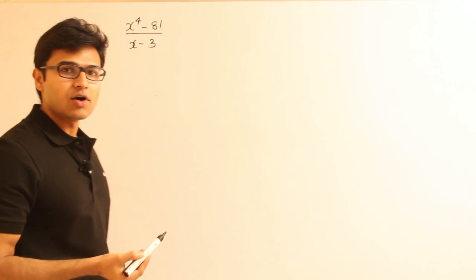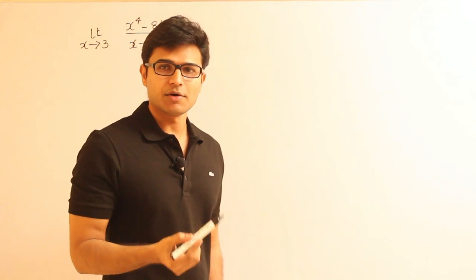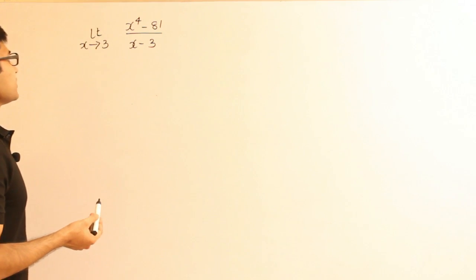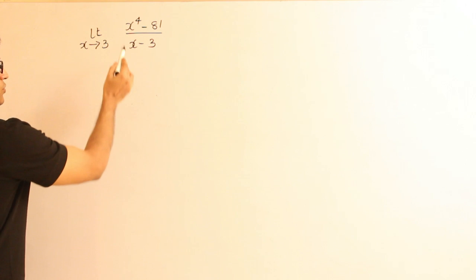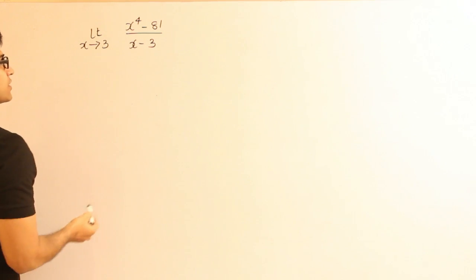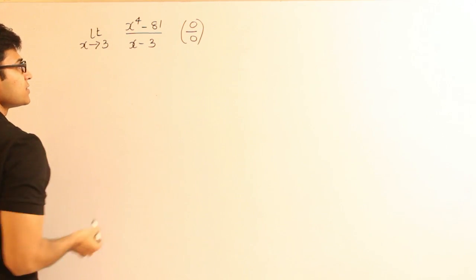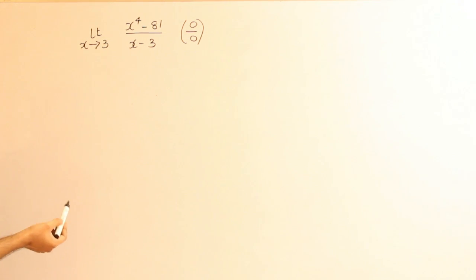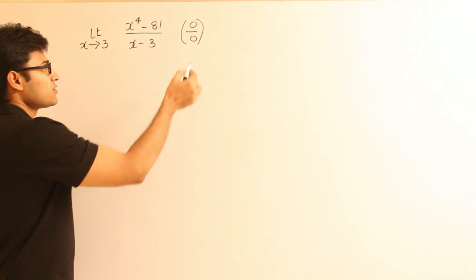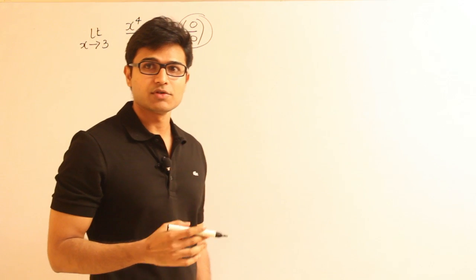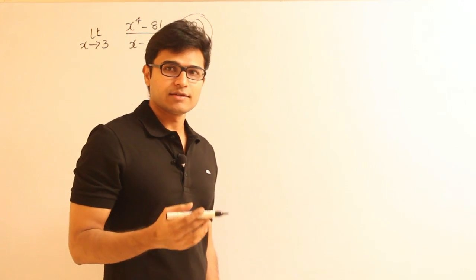Assuming that in the options we don't have 'limit does not exist' — only numbers are present — then how to find it out? If you directly substitute 3, you get 81 minus 81 over 3 minus 3, which is 0 by 0. This is a special indeterminate form — it is not defined. So we just want a value, and in this form, applying the limit directly gives 0 by 0. Therefore, we need to change the form to get a definite value.